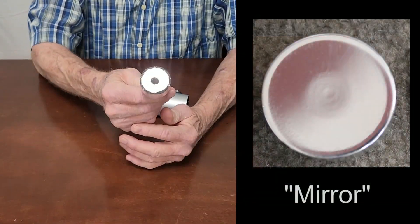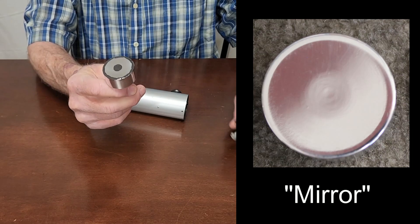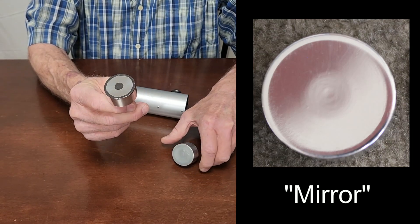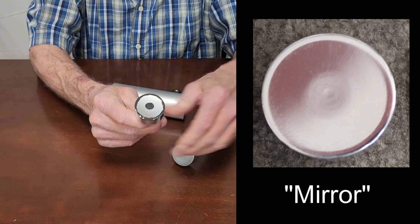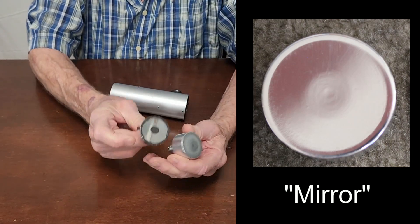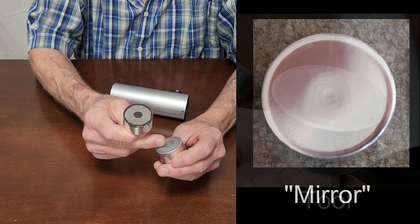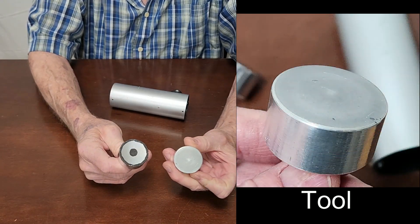Let me give you a closer look at this mirror, if you want to call it that, because it's barely functional as a mirror. It's a somewhat spherical surface, shall we say. This is the mirror that I made, and this is the tool that I used to make the mirror.